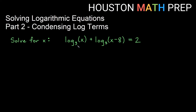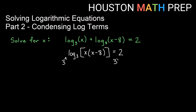For the next problem we have log base 3 of x plus log base 3 of x minus 8 equals 2. Addition between logs means we can condense into a single log term — add between logs becomes multiply inside one log. So we get log base 3 of x times (x minus 8) equal to 2. To solve I need to undo log base 3 using exponential base 3, since they are inverse operations with the same base.